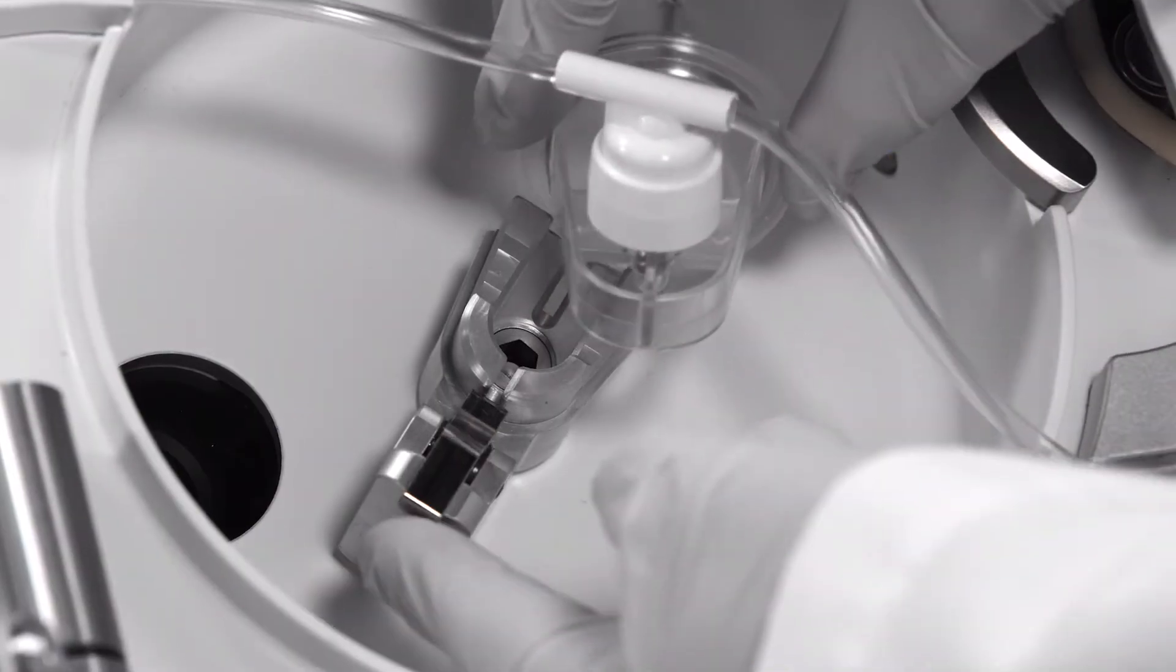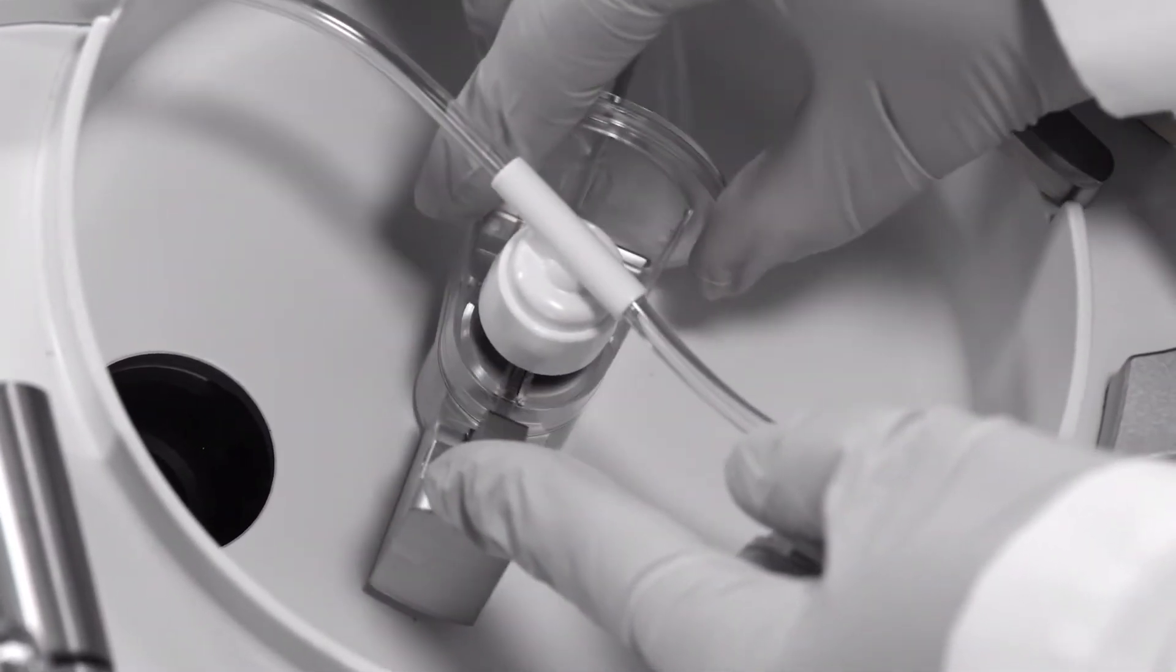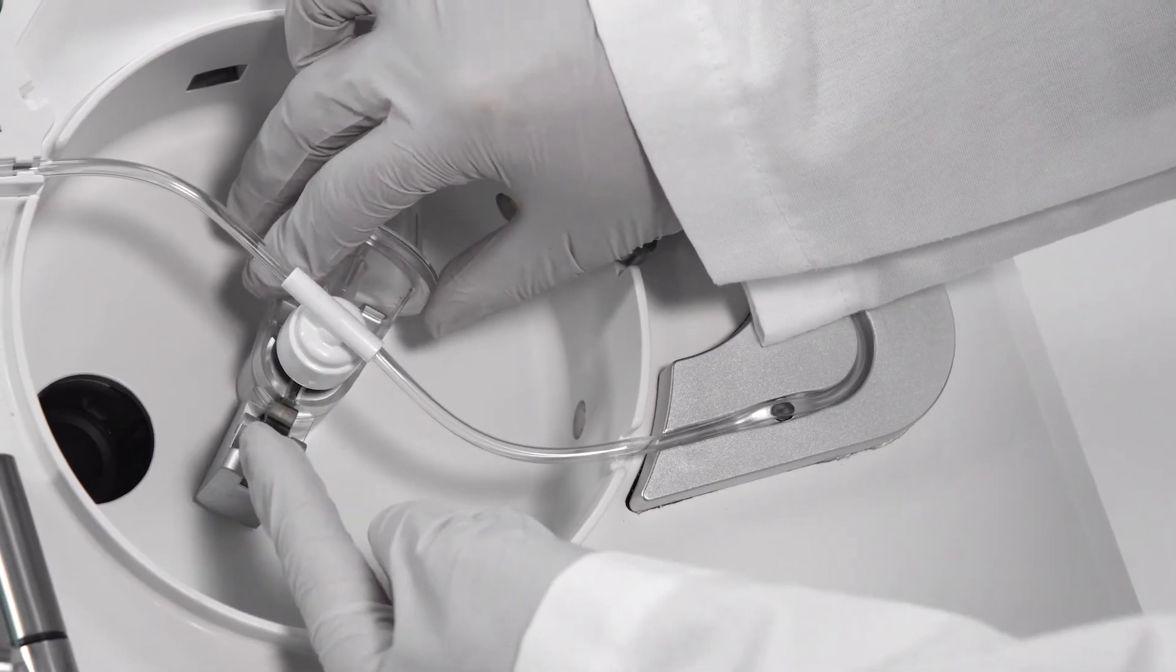Attach the centrifuge chamber or cone by lifting the silver lever in the chamber carrier and securing it by returning the lever to its upright position.